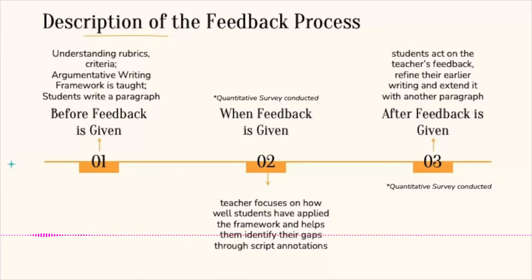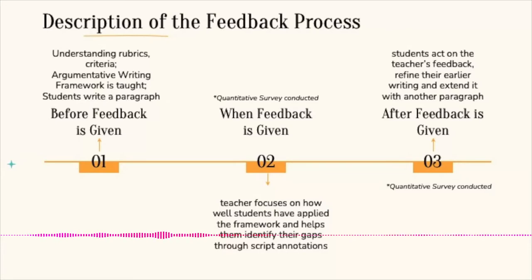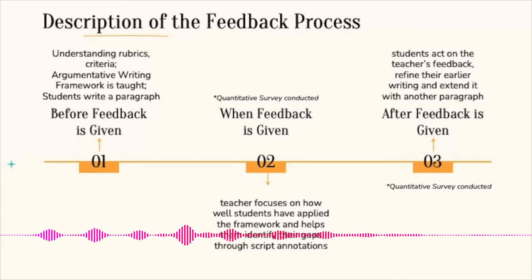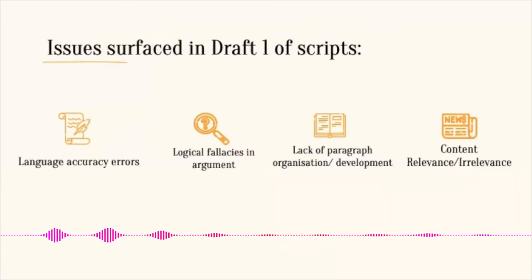We identify the gaps based on the things we focus on in the rubric, so that the students know how they can move on. At this point we also apply survey data. Then students redo and recreate the draft — that's step three. After feedback is given, students act on it, refine their earlier piece of writing, and write another paragraph, after which we apply another survey.